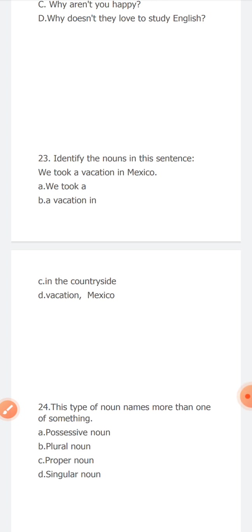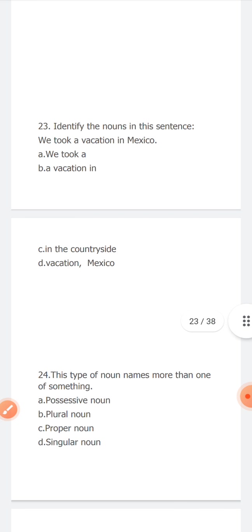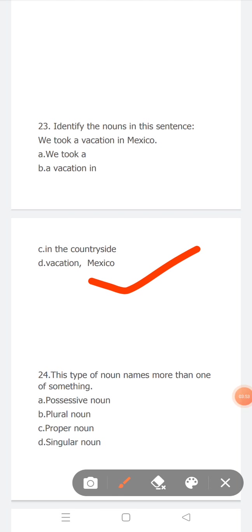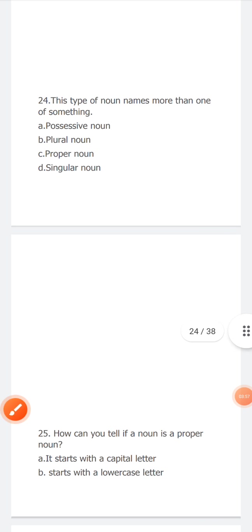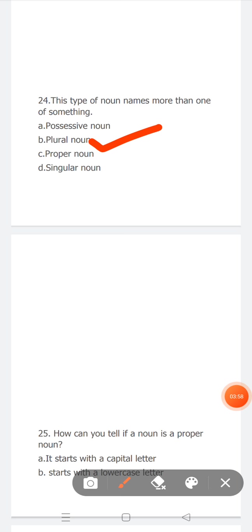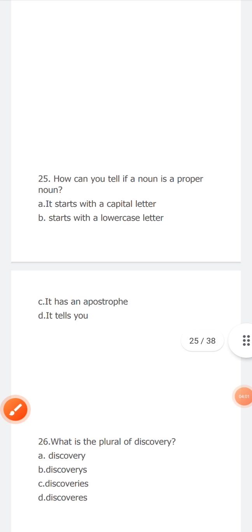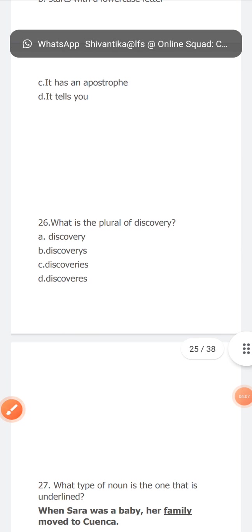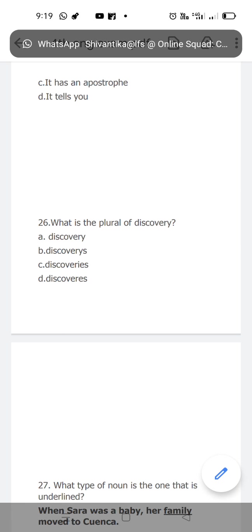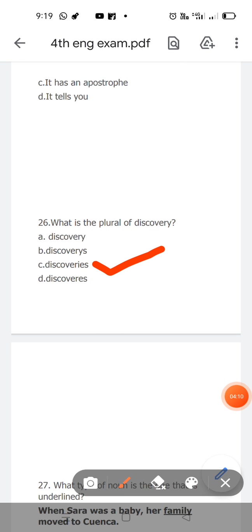This type of noun names more than one or something, more than one—plural noun. How can you tell if a noun is proper noun? It starts with capital letter. What is the plural of discovery? The plural of discovery is discoveries I-E-S.